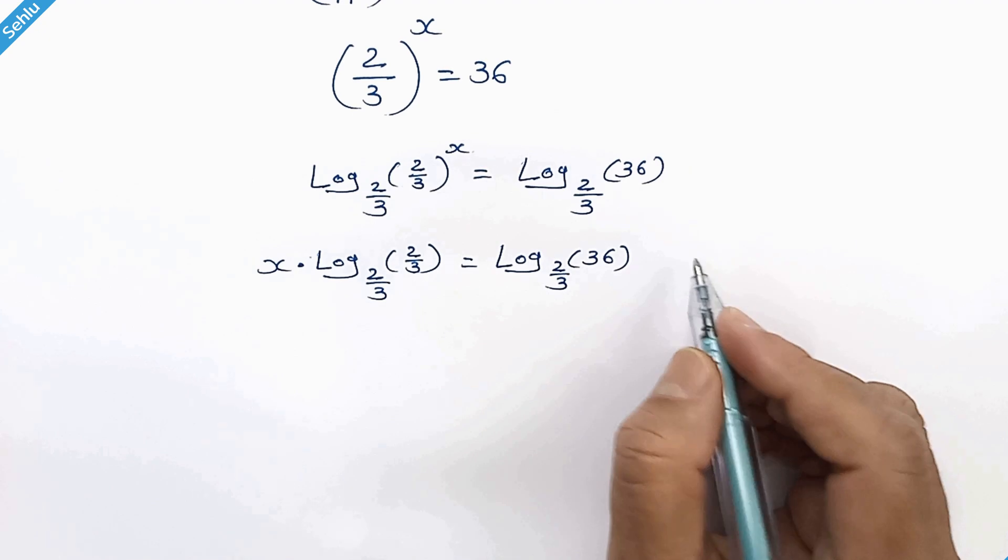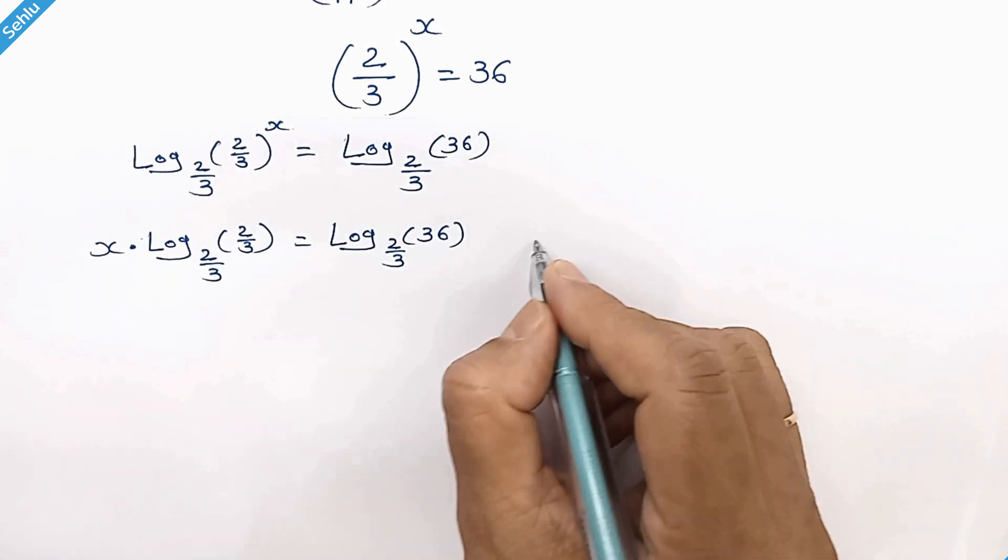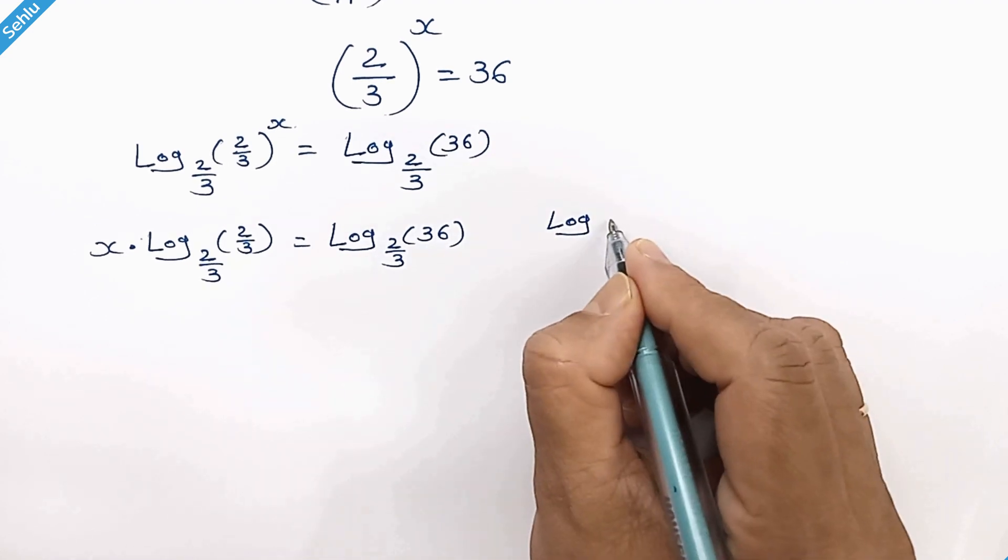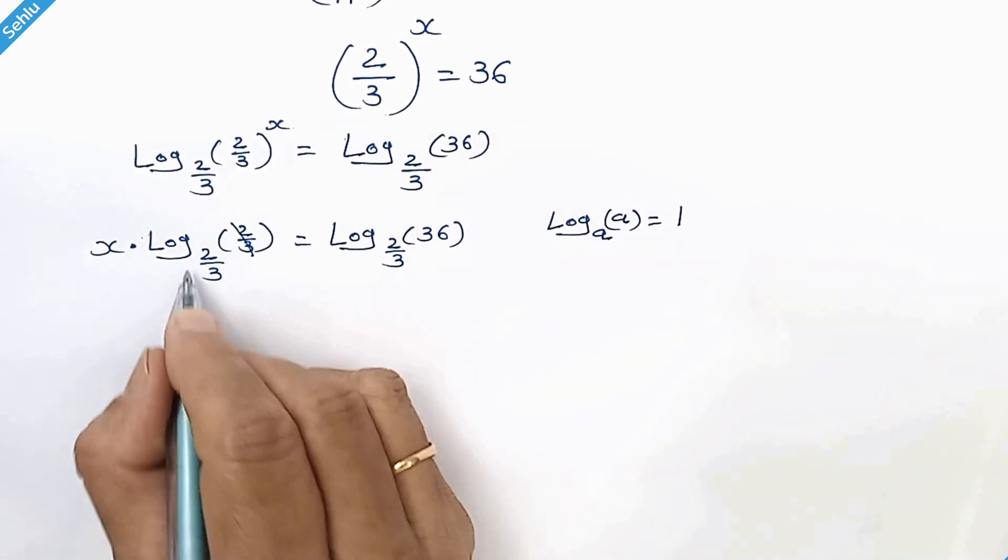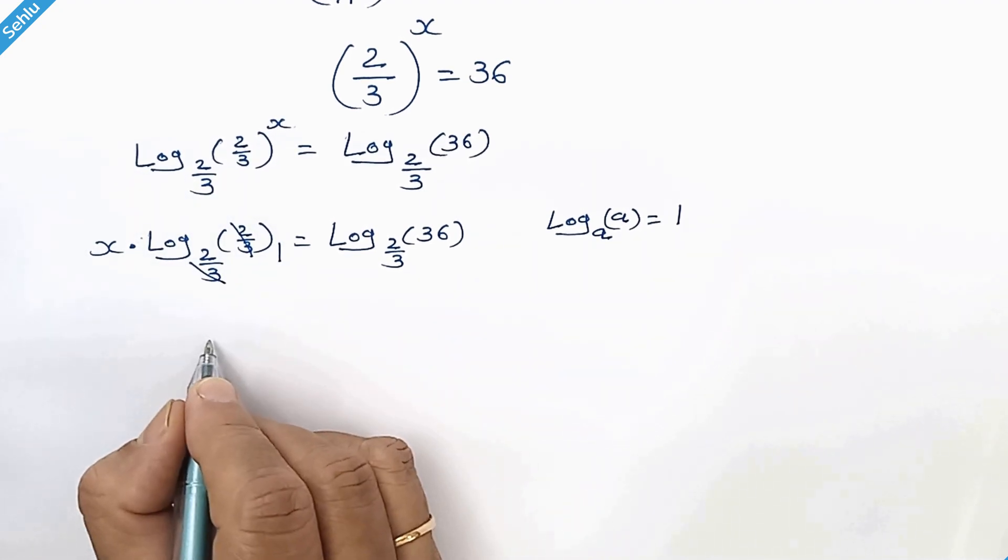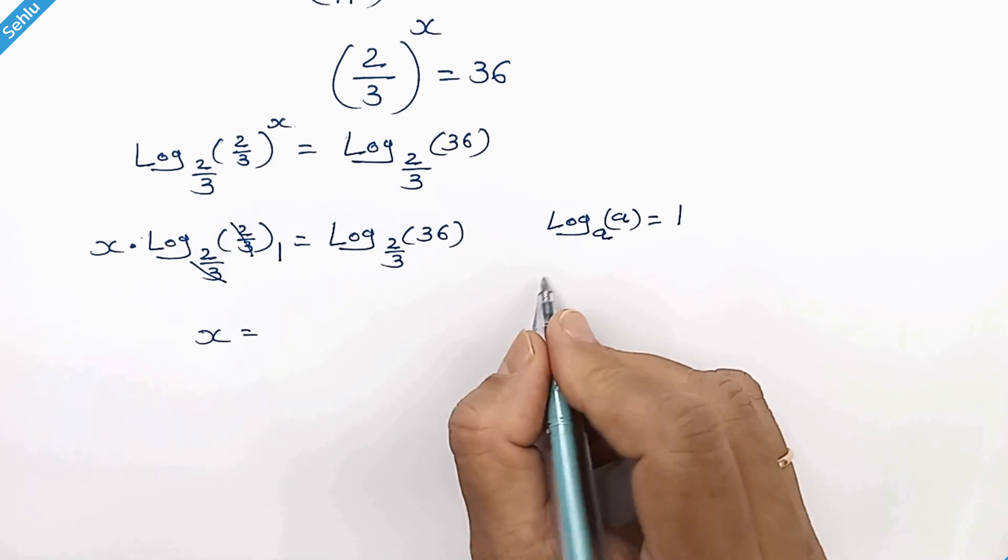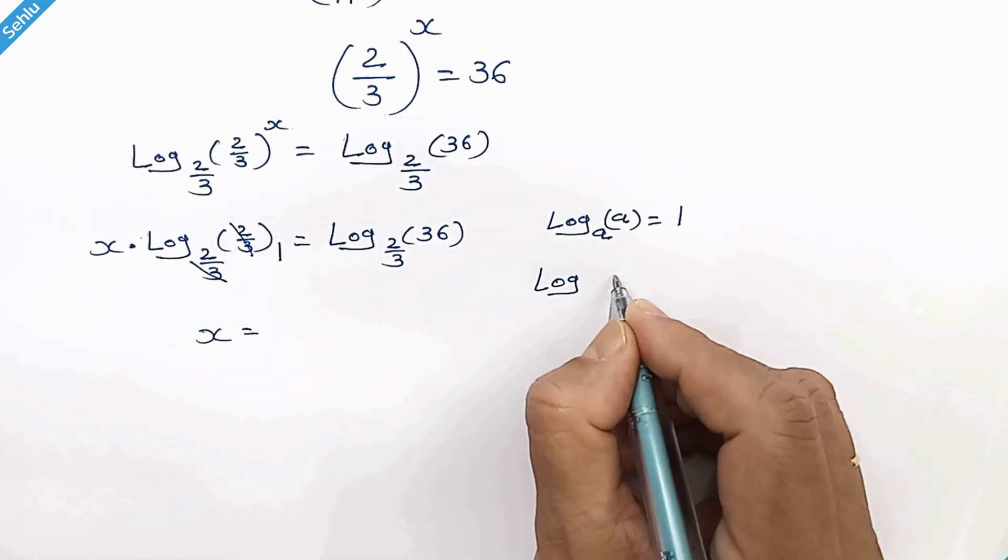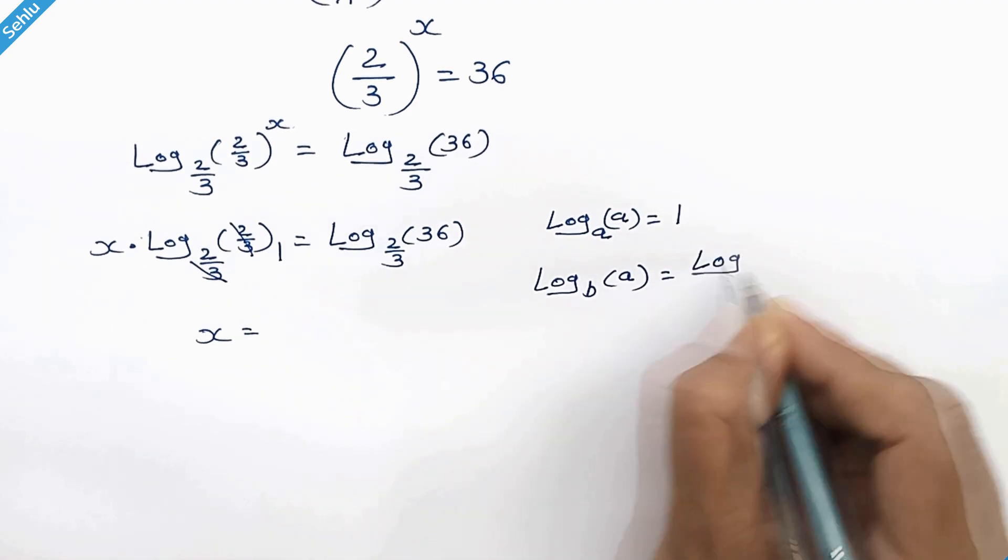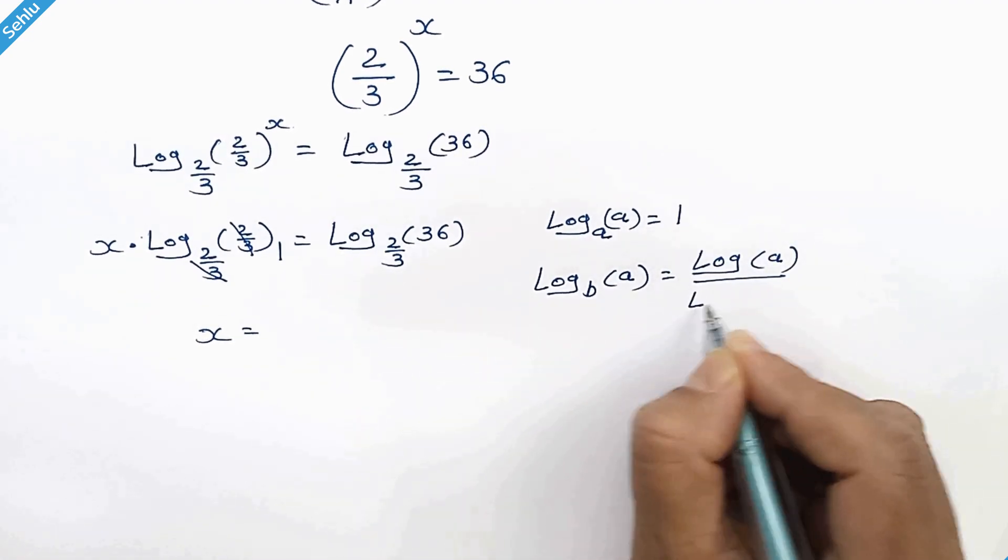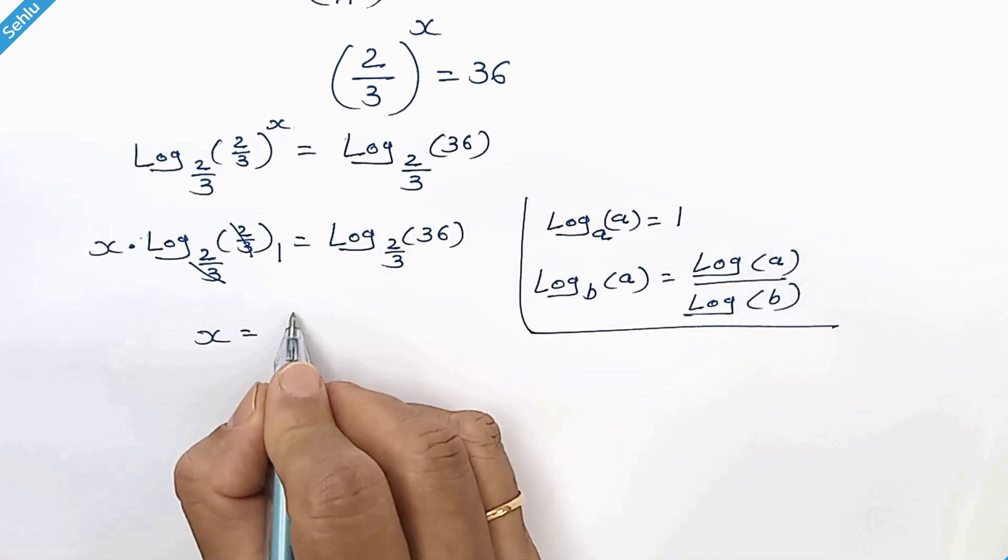Now here we will apply a rule. When we have log of a base a, it equals 1. So here we have 1. So it will be x is equal to - and here let's recall a rule: when we have log of a base b, it can be log of a over log of b.